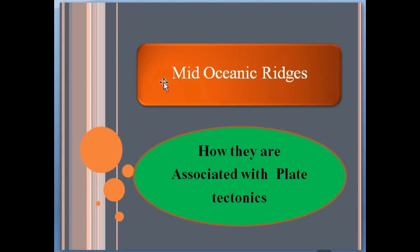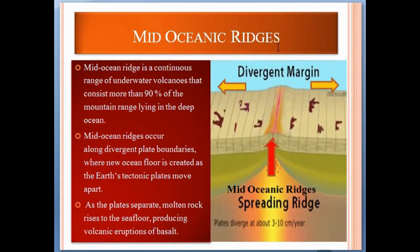Today we learn about mid-oceanic ridges — how they are associated with plate tectonics. Mid-oceanic ridges is a continuous range of underwater volcanoes that consists of more than 90% of the mountain range laying in the deep ocean. Mid-oceanic ridges occur along divergent plate boundaries where new ocean floor is created as Earth's tectonic plates move apart. As the plates separate, molten rock rises to the seafloor, producing volcanic eruption of basalt.